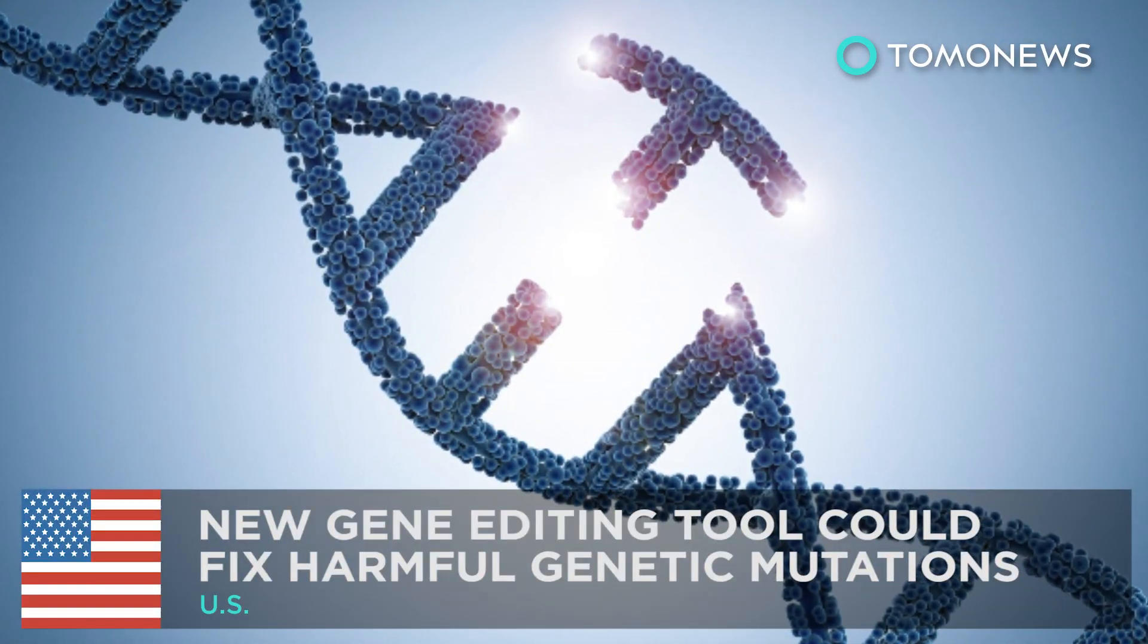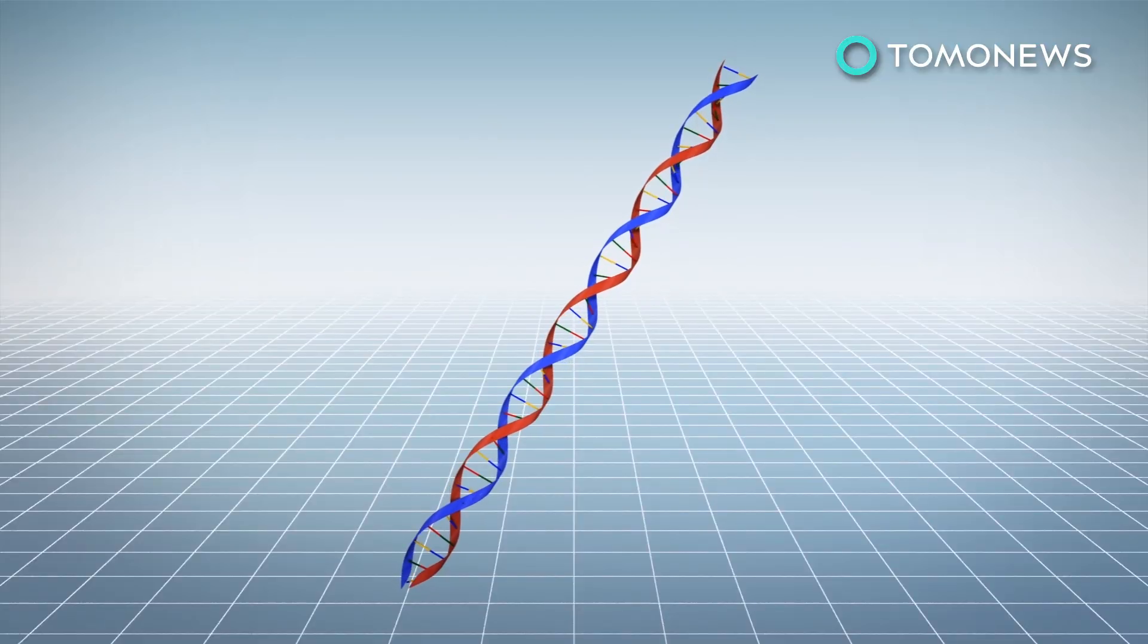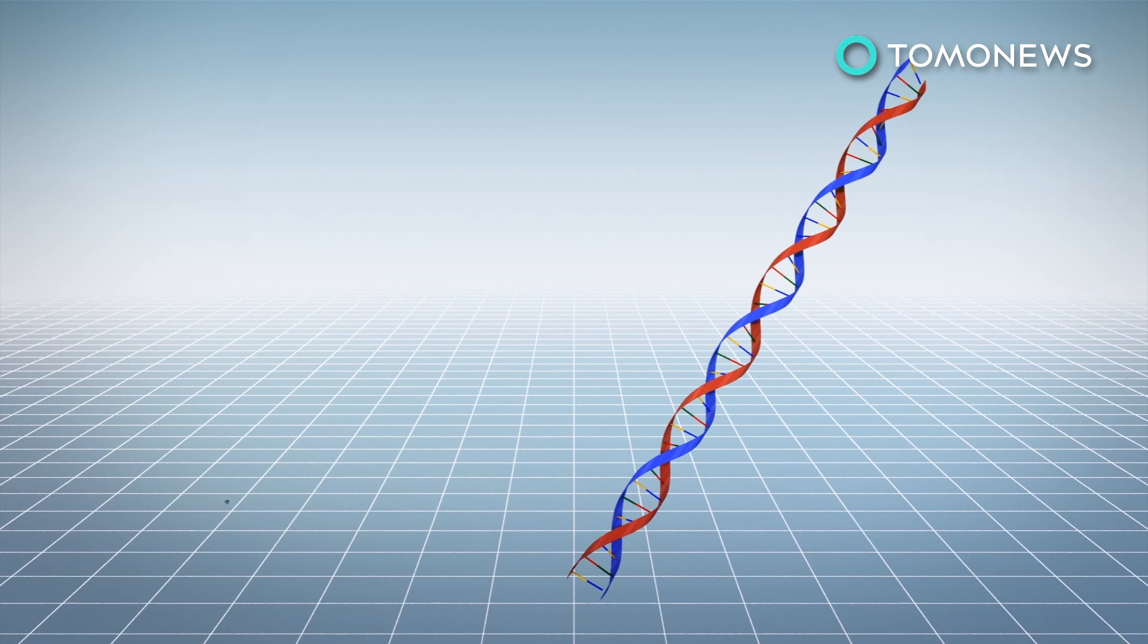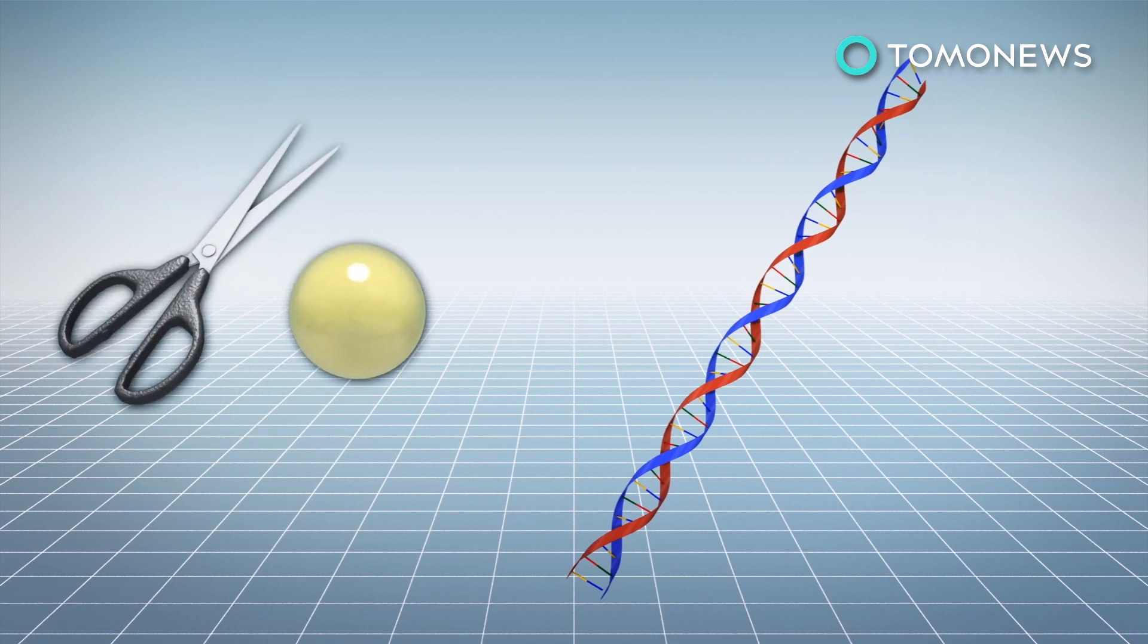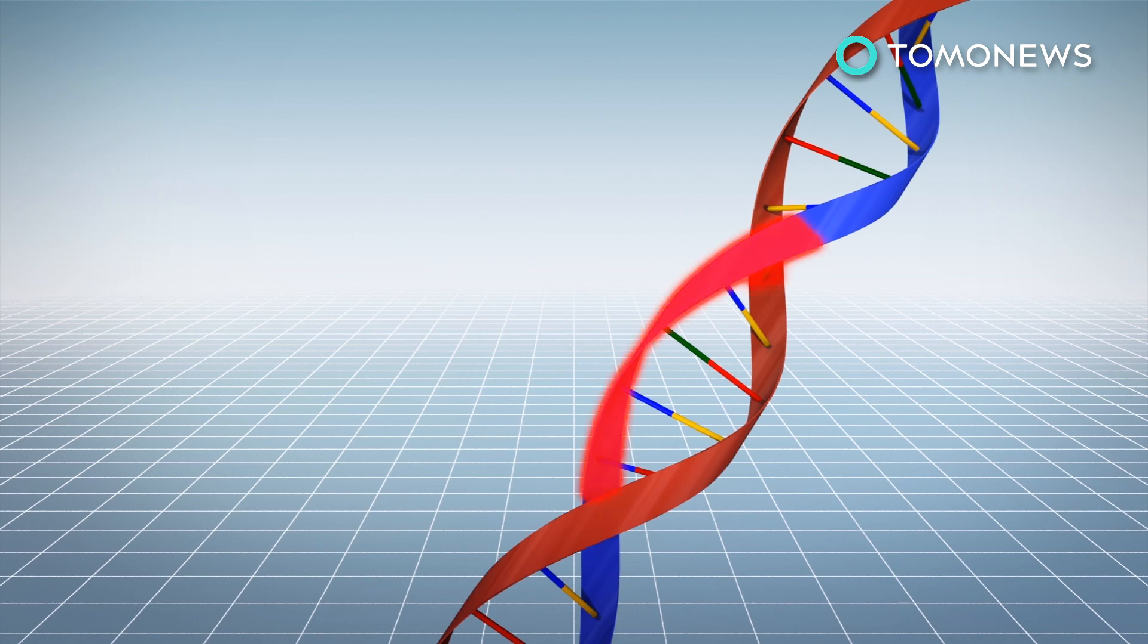New gene editing tool could fix harmful genetic mutations. Scientists from Harvard University and the Massachusetts Institute of Technology have developed a new method of editing DNA called prime editing, which combines CRISPR-Cas9 with a reverse transcriptase enzyme.